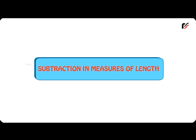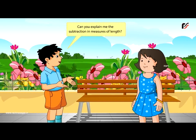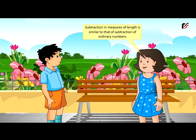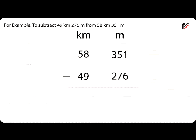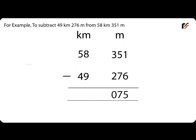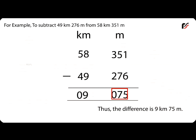Subtraction in Measures of Length. Can you explain the subtraction in Measures of Length? Subtraction of Measures of Length is similar to that of subtraction of ordinary numbers. For example, to subtract 49 km 276 m from 58 km 351 m, arrange the figures in km and m columns respectively. Subtract the figures in the m column first, then subtract the figures in the km column. Thus, the difference is 9 km 75 m.